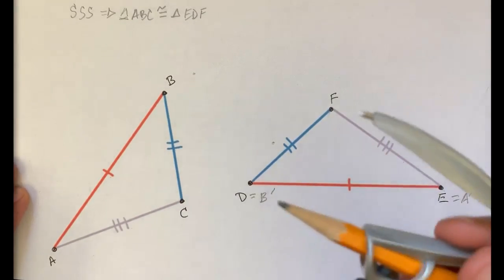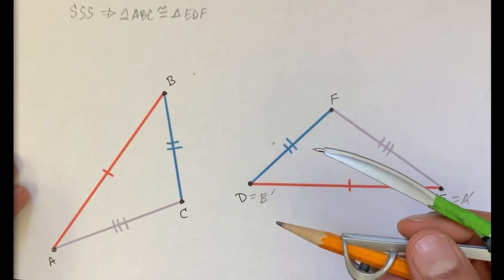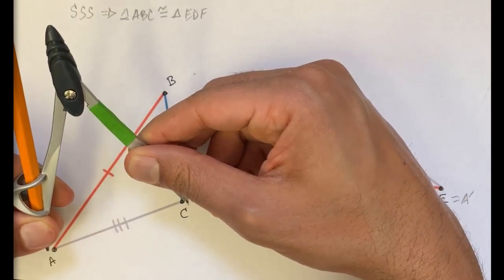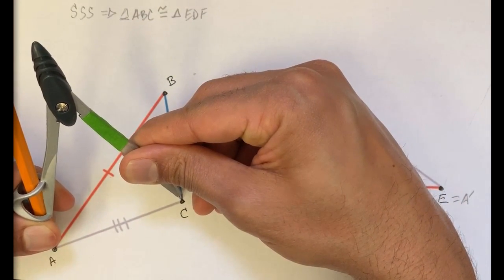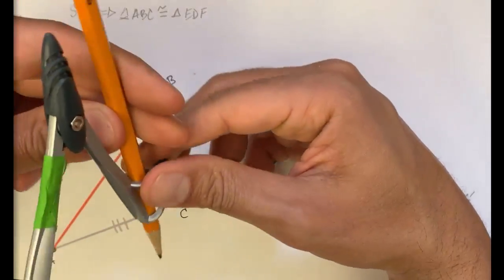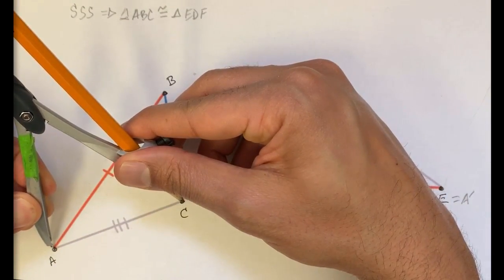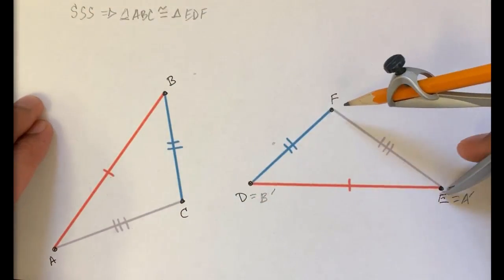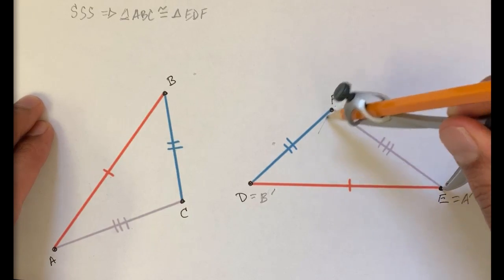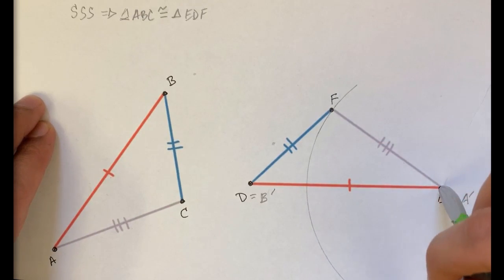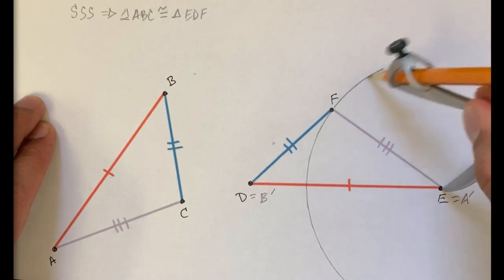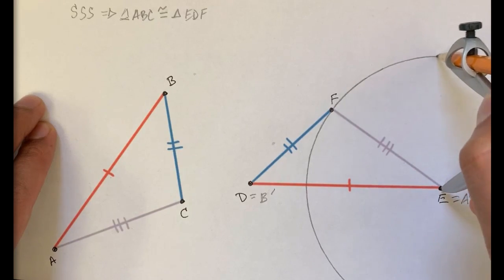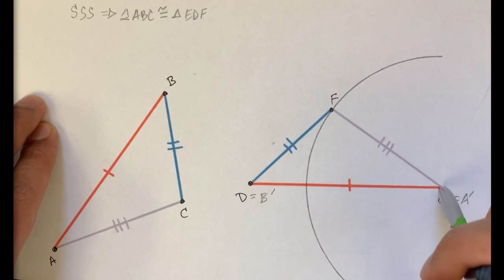And to think about where point C is, this is where this compass is going to prove useful. We know that point C is exactly this far away from point A. I will measure that with my compass. Point C is exactly that far from point A. And so that means that point C needs to be someplace on this curve right over here, on this arc that I'm doing. These are some of the points that are exactly that far away.